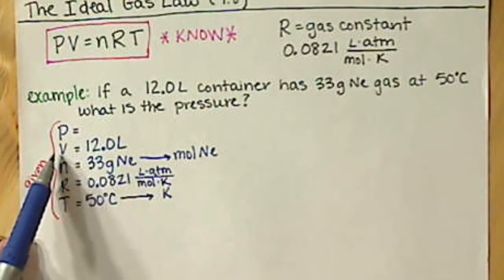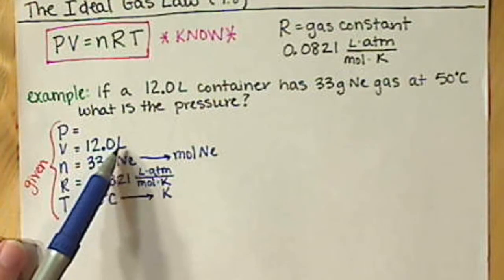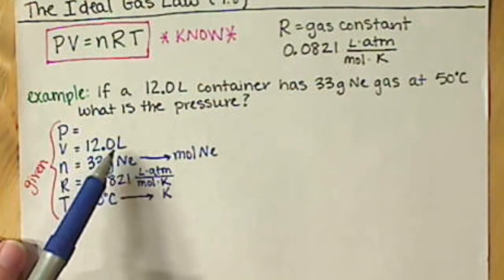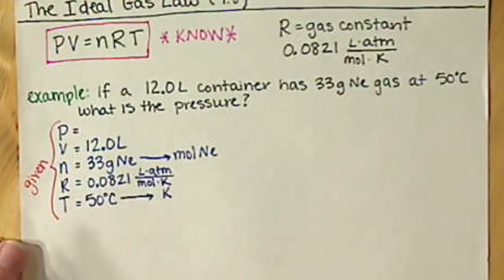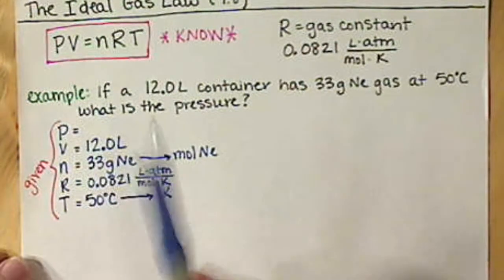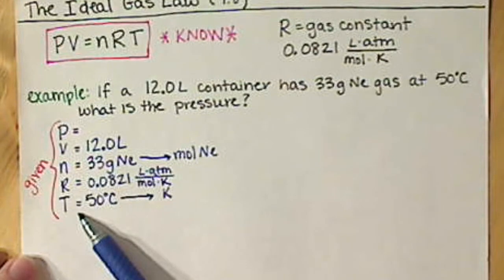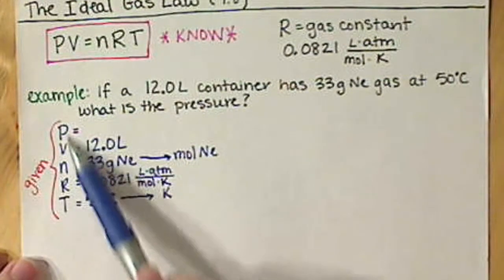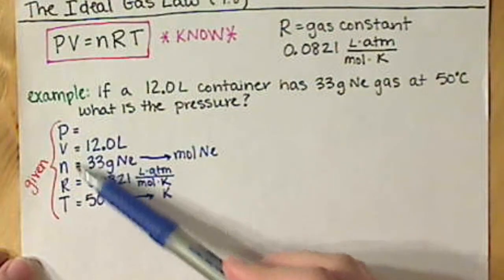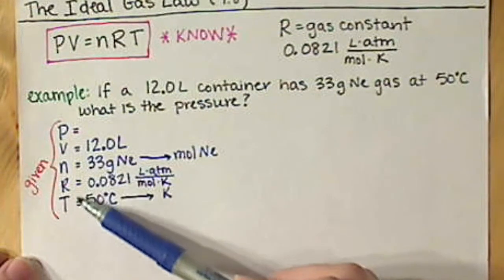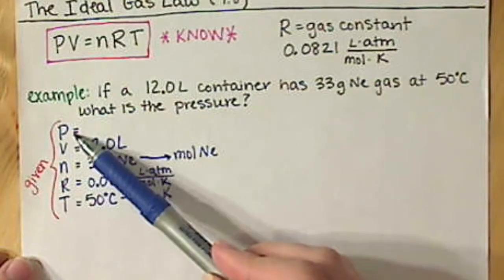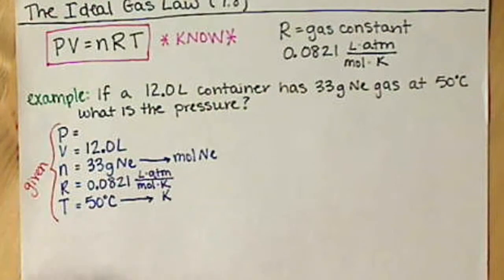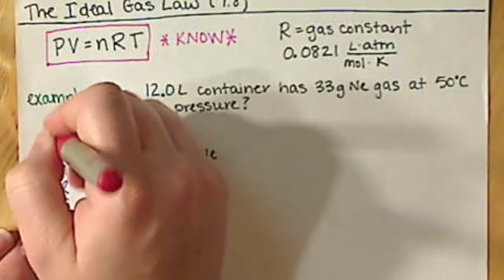Our units of volume, we are given in liters. That works out because we have liters in our R constant. So those are going to cancel each other out. What's nice about listing all of our values here on the side is now that we've read through the problem and listed everything that we've been given, we can see that we have all of our values for Puvnert except for one. So that means that we can use Puvnert to arrive at our pressure.